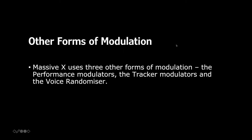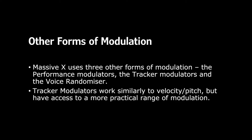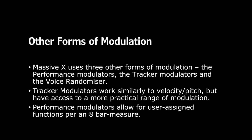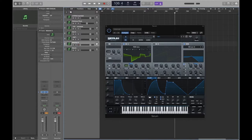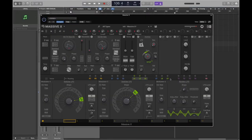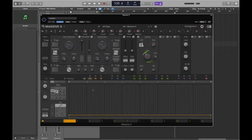Massive X also has other forms of modulation: performance modulators, tracker modulators, and the voice randomizer. Tracker modulators work similarly to velocity and pitch but with a more practical range of tools. Performance modulators allow for user-assigned functions per an eight-bar measure. Let's look at the performance tab - it's set over eight bars but you can bring the rate all the way down to effectively have it lasting over 64 bars.